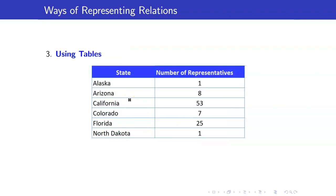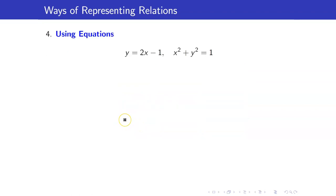We can also represent relations using tables. Now it is possible for relations to have infinitely many elements if we represent them as ordered pairs. That is why we can also represent relations using equations.